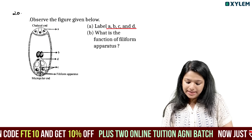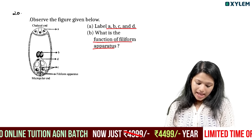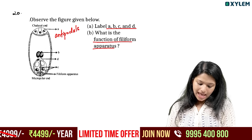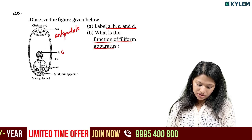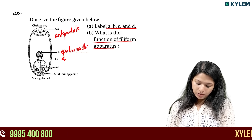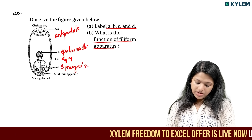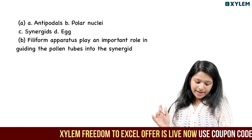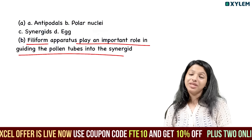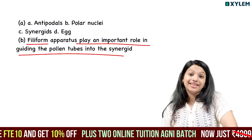Observe the figure given below and label A, B, C, and D. A is the antipodals. B is the central cell with polar nuclei. C is the synergids. D is the egg. The function of the filiform apparatus: it plays an important role in guiding pollen tubes into the synergids through chemical secretion.